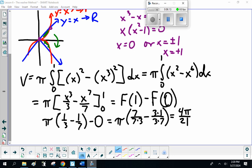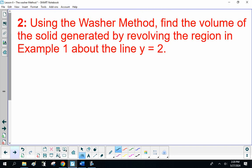Okay. Now, let's try one more. Well, there's two more. So, using the washer method, find the volume of the solid generated by revolving the region in Example 1 about the line y = 2. First thing we do, draw a sketch. So, here it is.